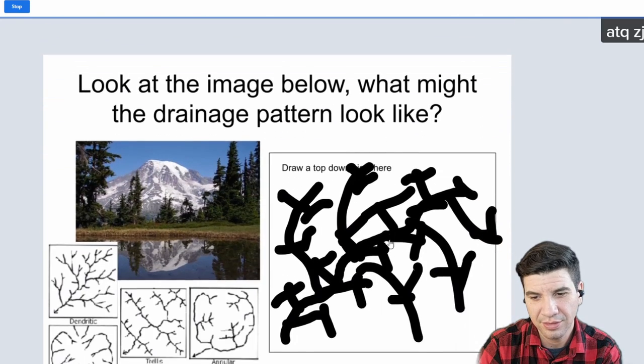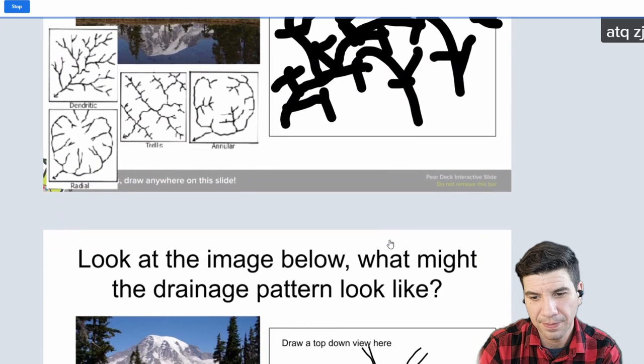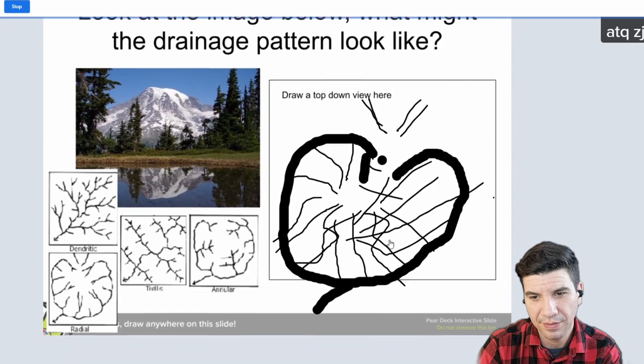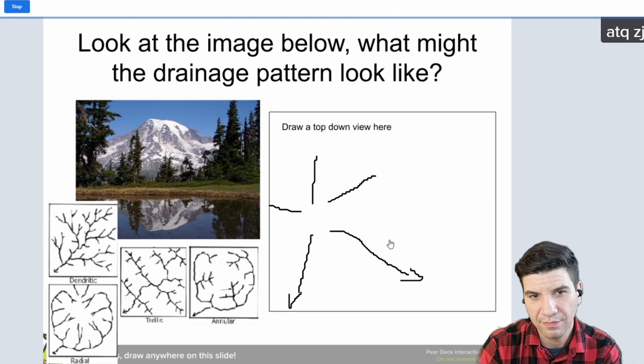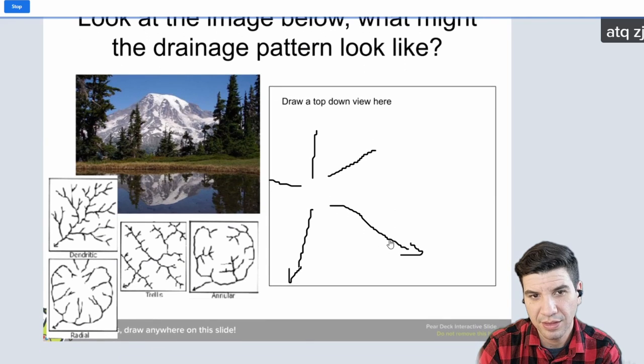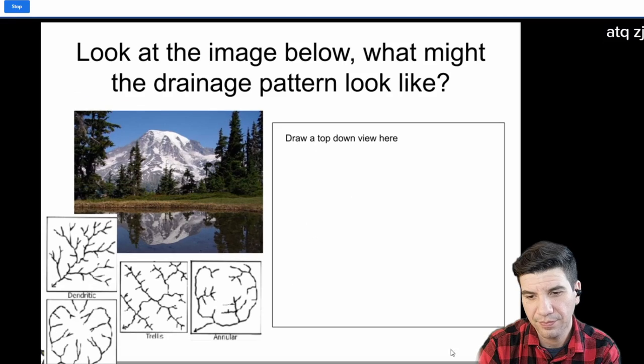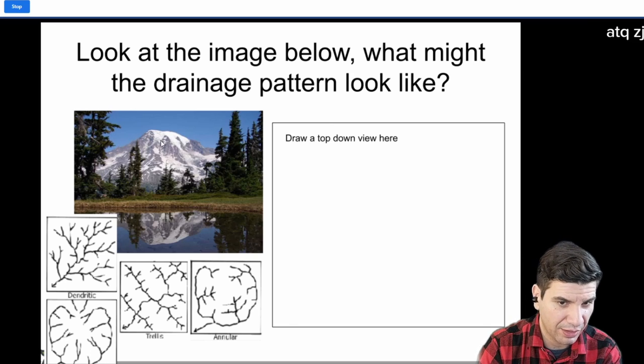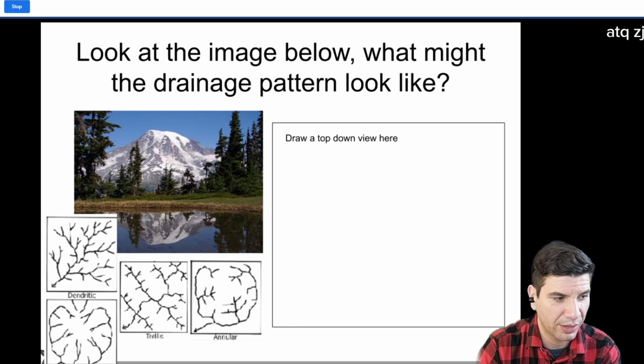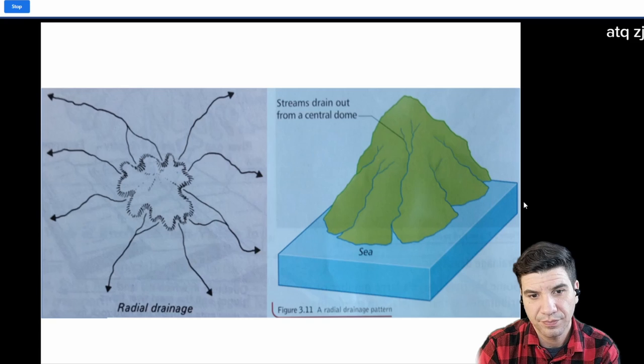Hey, Miss G, radial. Very good, whoever drew this one. All right. We're going to practice these more. So, just know that radial is when we have a sharp mountain that's pointed up.